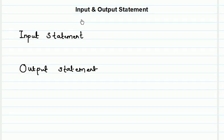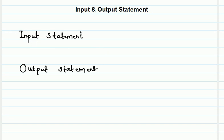Hello friends, welcome to Code Semantic. In today's session we are going to study input and output statements in C programming. This is a very crucial part in any programming language because input statements are used to take input from an end user, and output statements are used to display output to the end user. C provides ready-made functions for this: scanf is used to accept input from a user, and printf is used to display output.